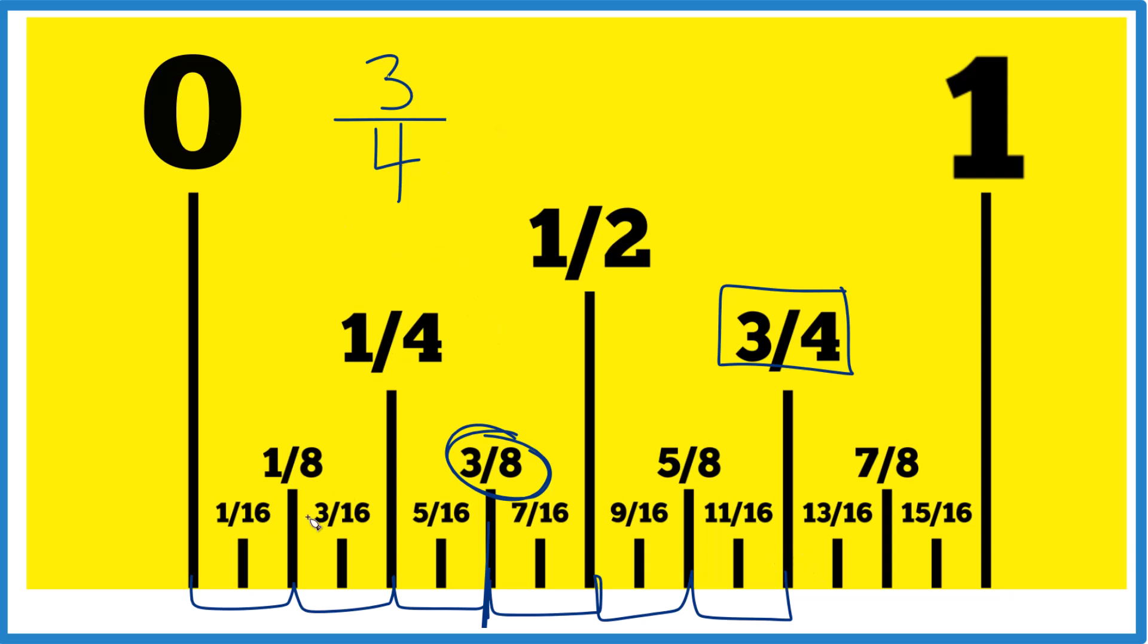Another way to think about it is we have one, two, three-fourths. We could take half of each one of those. So half of three, essentially. Half of three is 1.5. And we're just taking half of four pieces. We'll keep the denominator the same. So this is half of three-fourths. A little bit awkward, though.